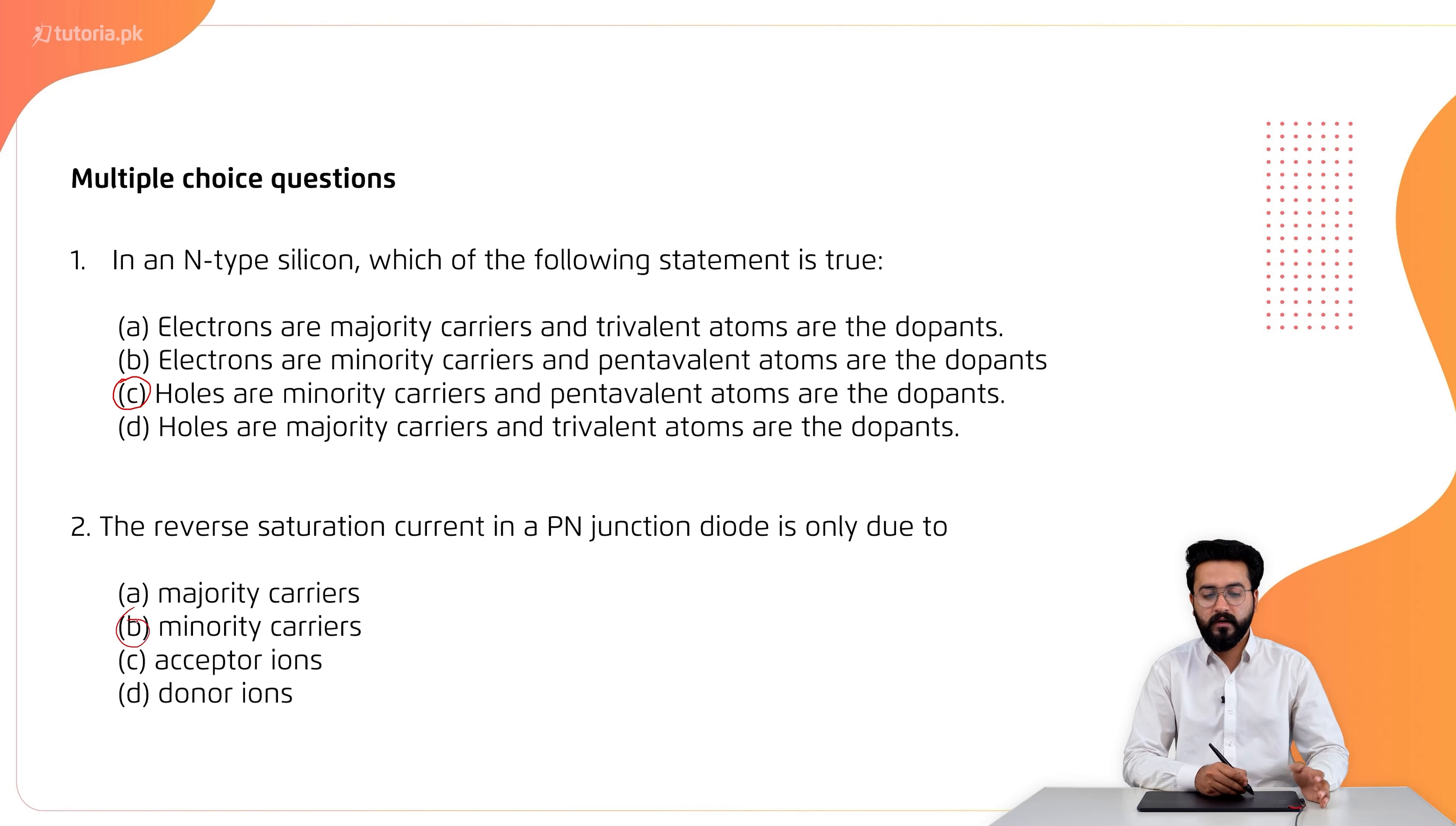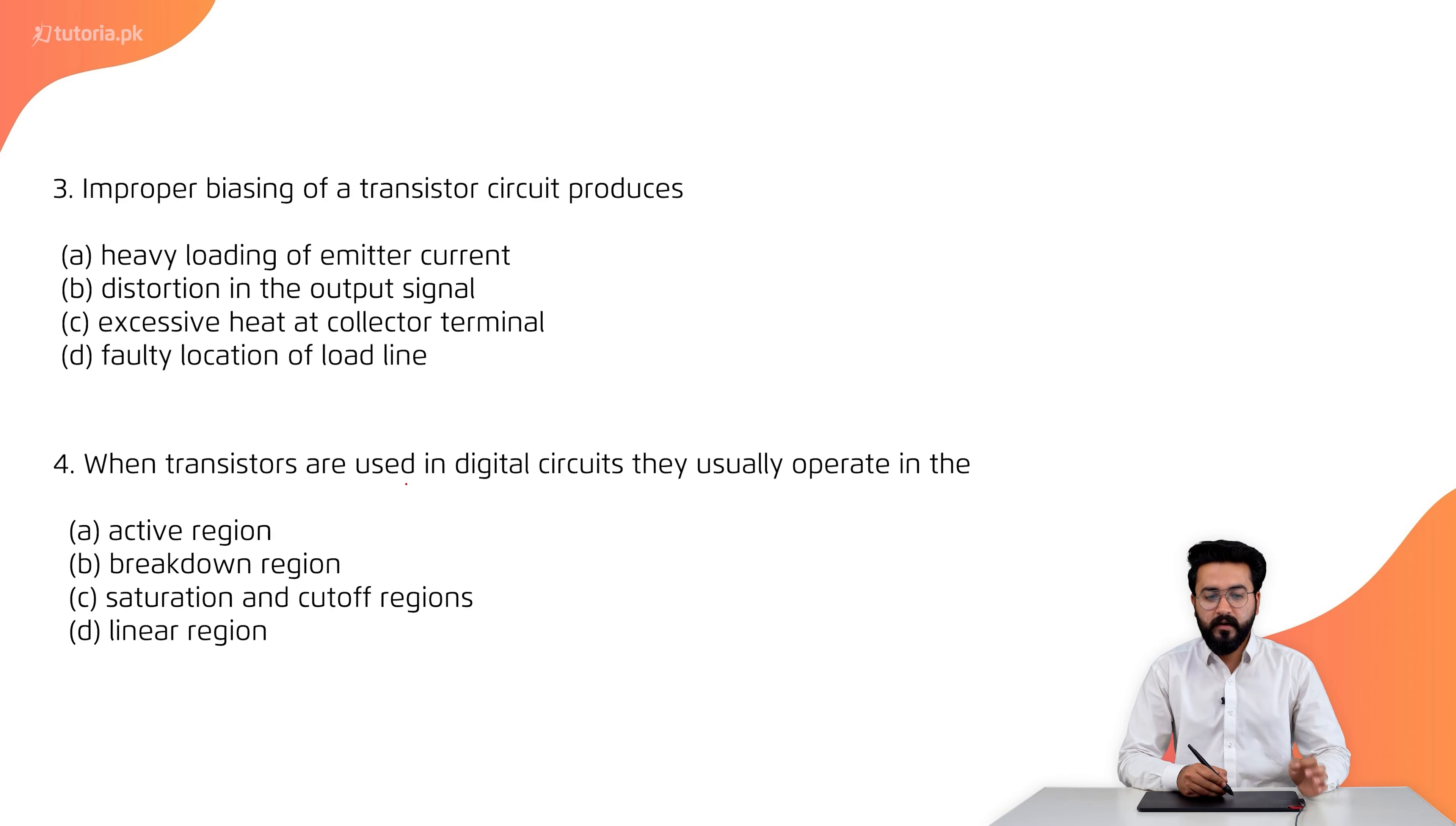The third one is, improper biasing of a transistor circuit produces. The correct option is B, distortion in the output signal. If there is distortion in the output signal, then it becomes improper biasing.